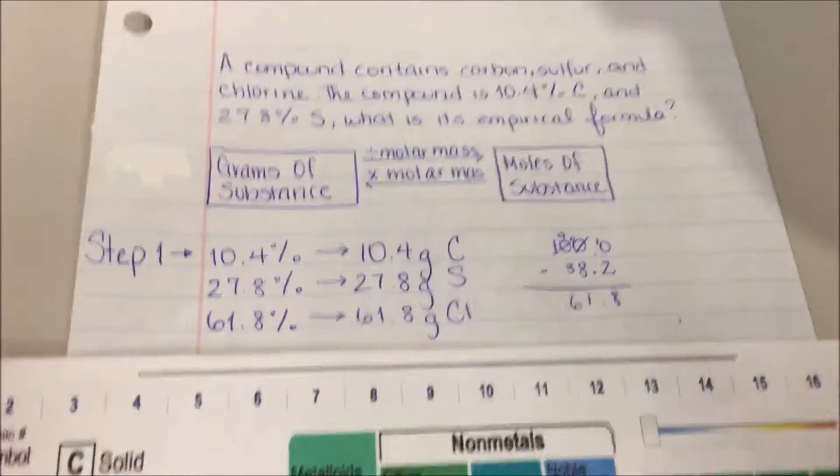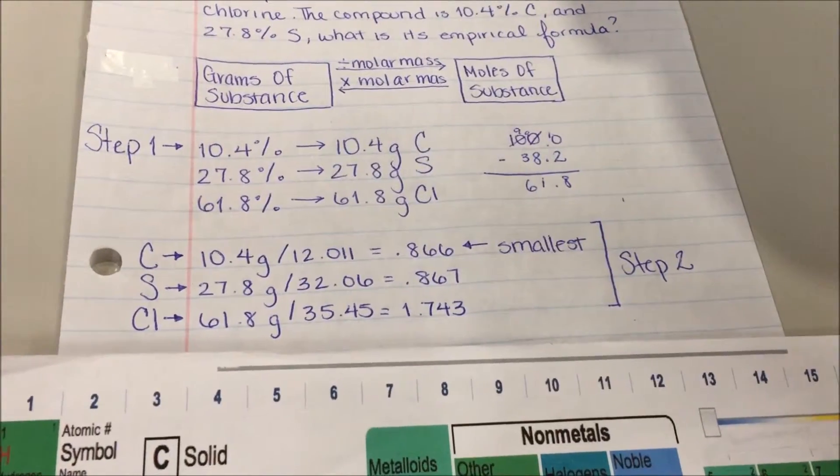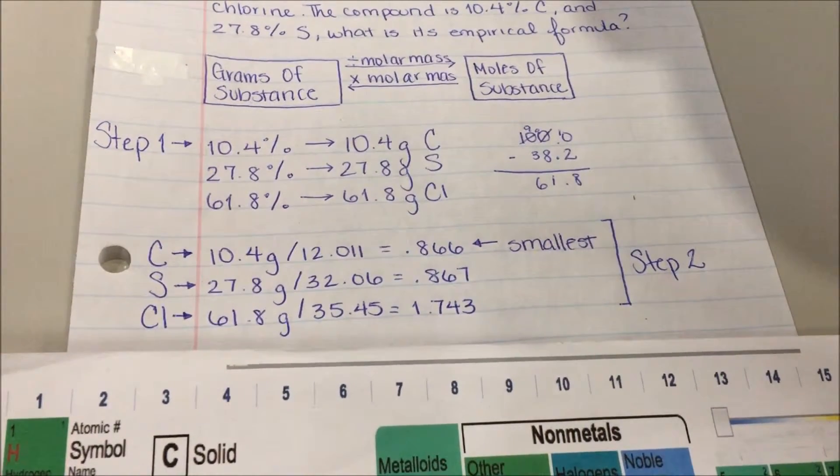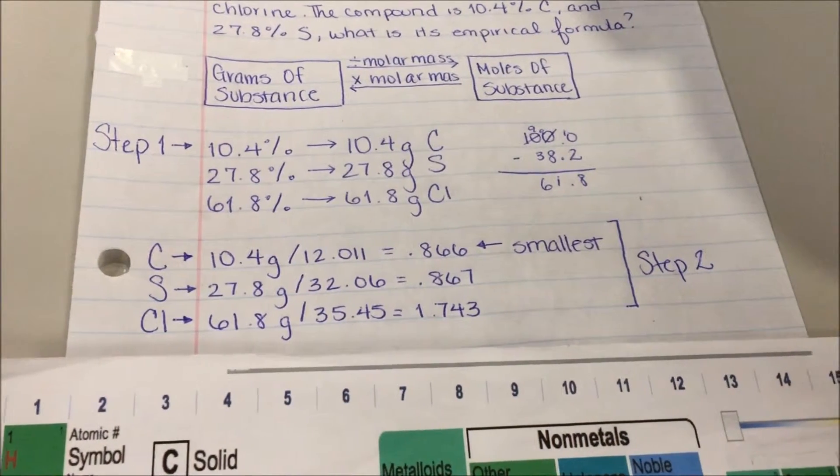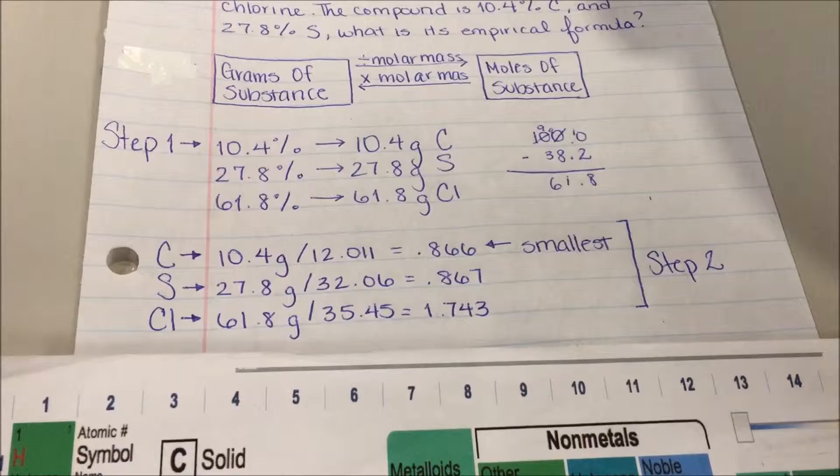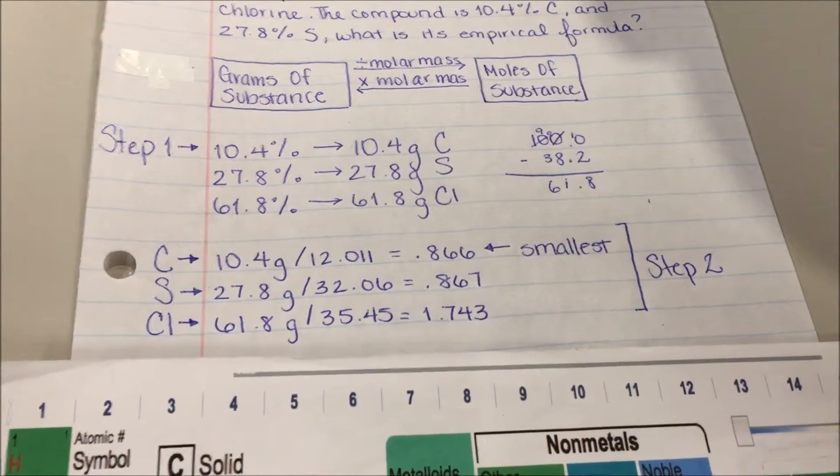For chlorine, carbon would be divided by 12.011 to get 0.866. Sulfur would be divided by 32.06, which gives us 0.867. And chlorine would be divided by 35.45 to get 1.743.